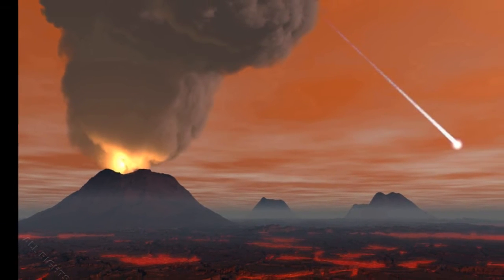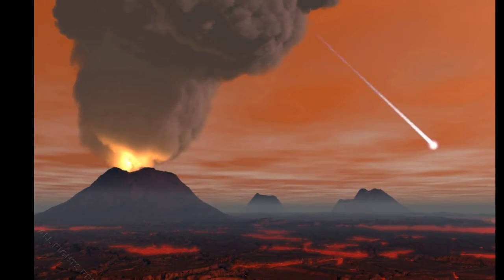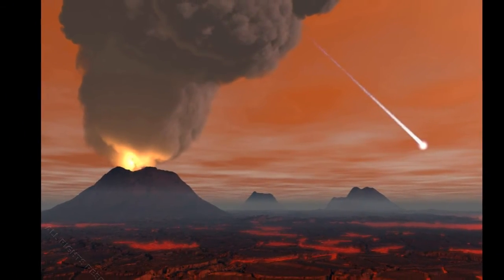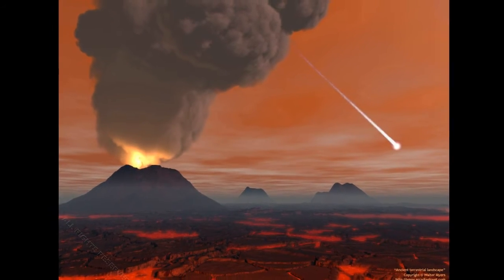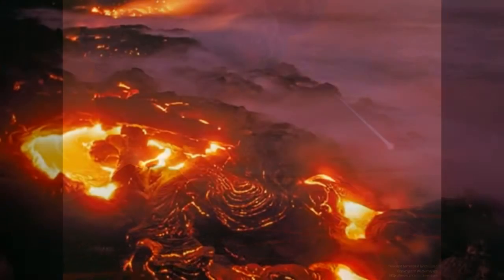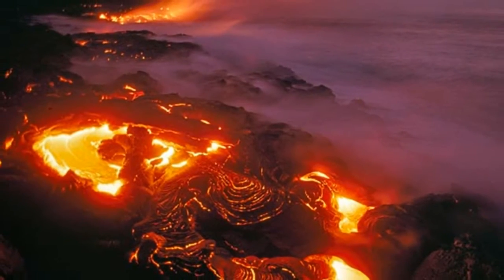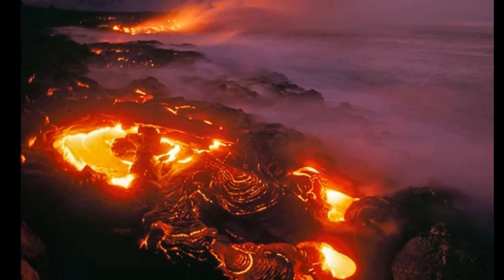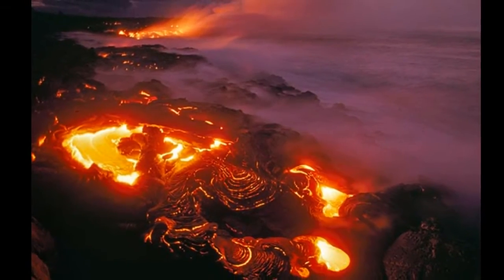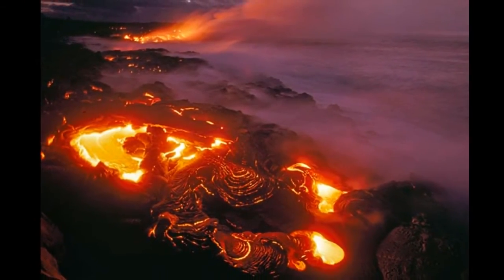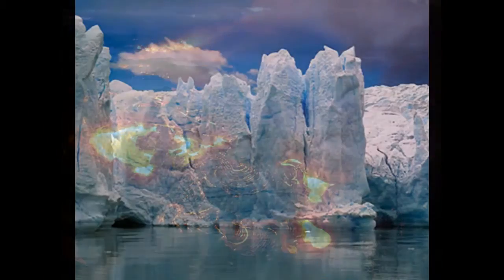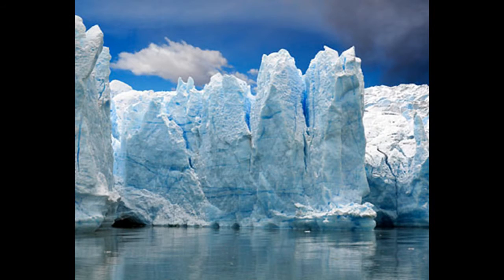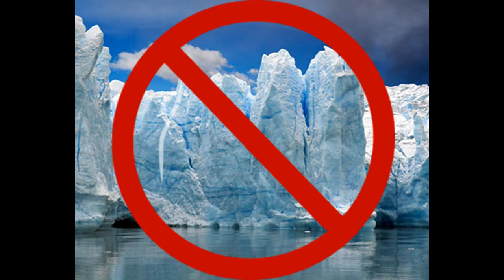Carbon dioxide emissions were abundant from volcanoes. This high concentration most likely gave rise to an atmospheric greenhouse effect that warmed the Earth's surface sufficiently to prevent the development of glaciations, for which there is no evidence in Archean rocks.